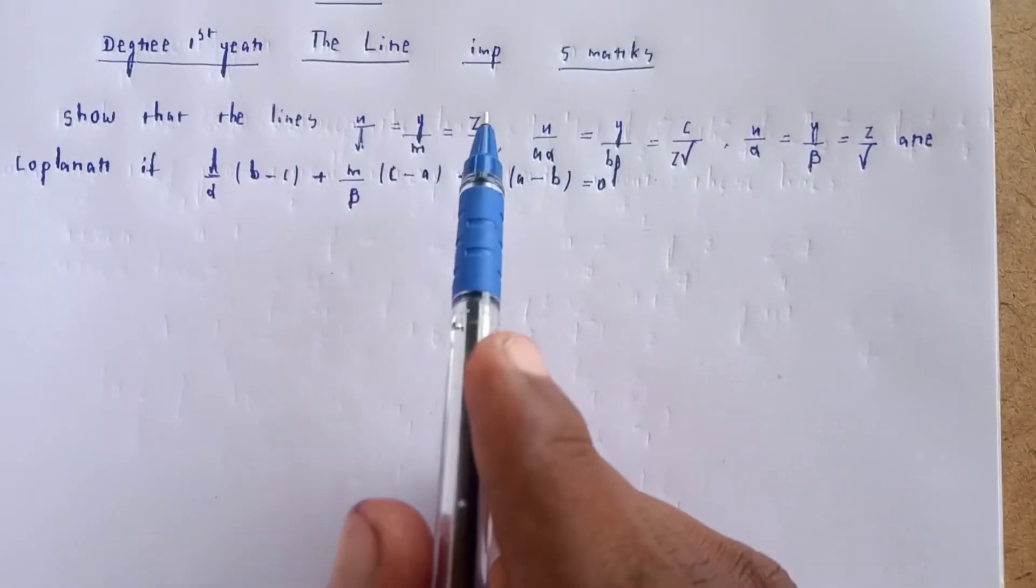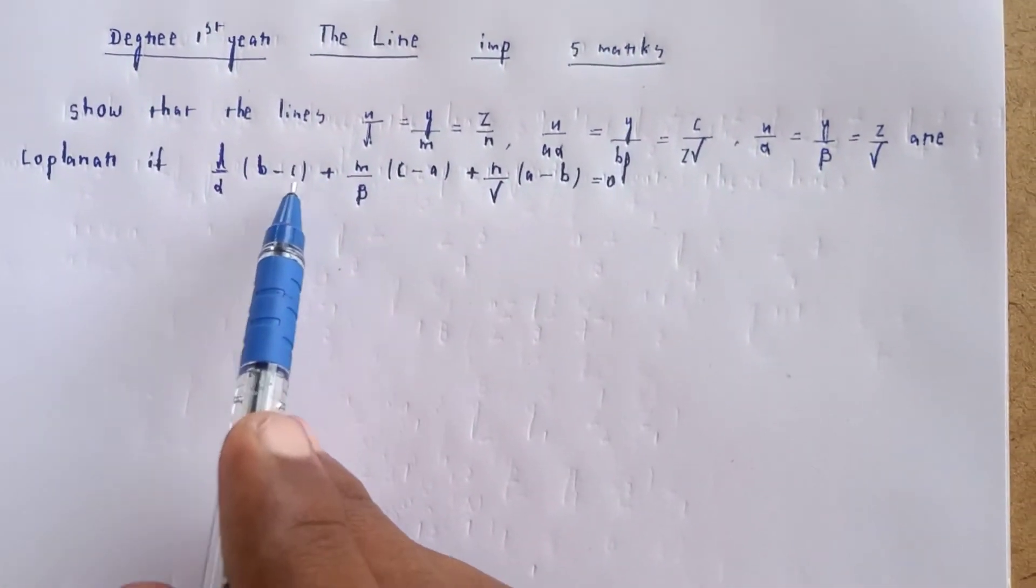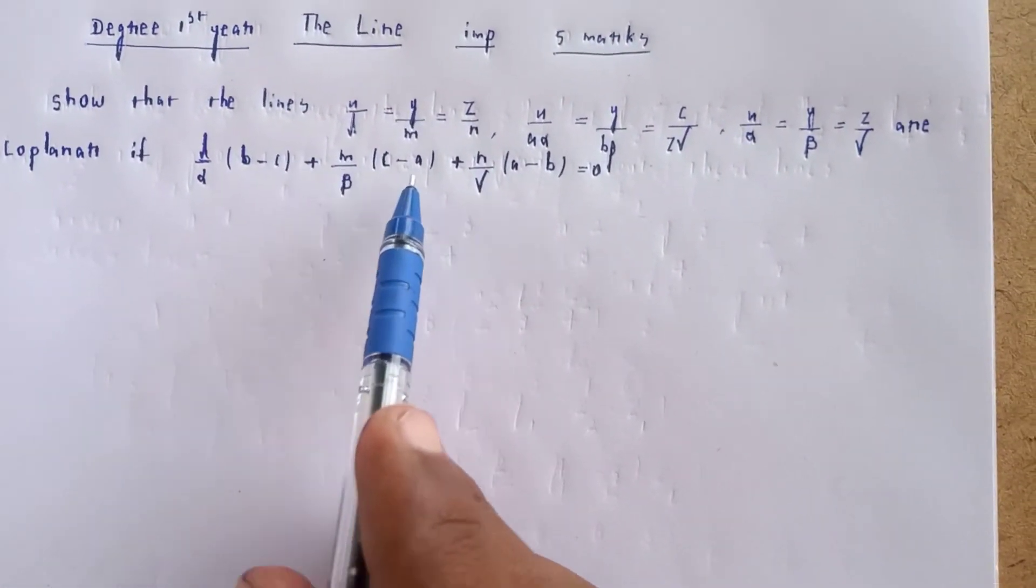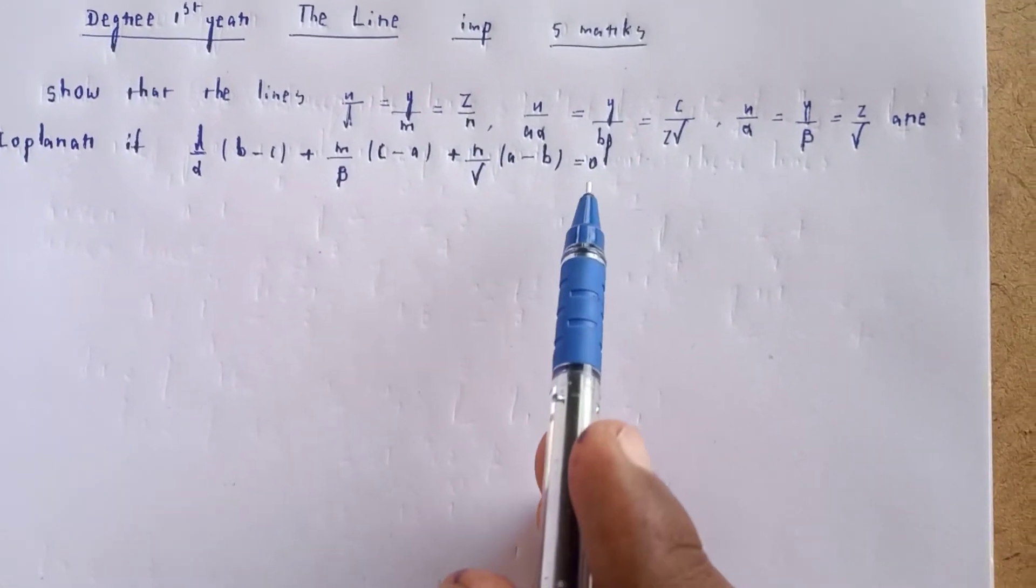If you substitute and it equals zero, then the lines are coplanar. The coplanarity condition is: l/α times (b - c) plus m/β times (c - a) plus n/γ times (a - b) equals zero.